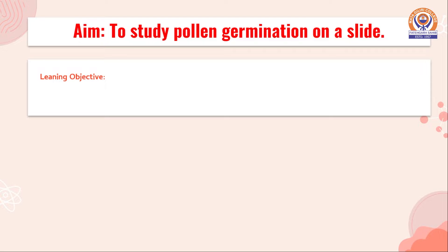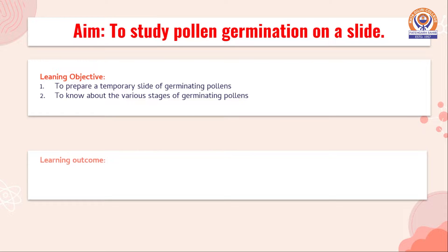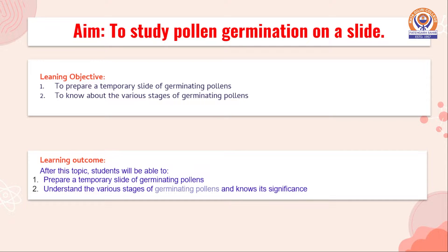Our today's topic is to study pollen germination on a slide. The learning objectives for this will be to prepare a temporary slide of germinating pollens and to know about the various stages of germinating pollens. The learning outcome would be that after this topic, students will be able to prepare a temporary slide of germinating pollens, understand the various stages of germinating pollens, and know its significance.